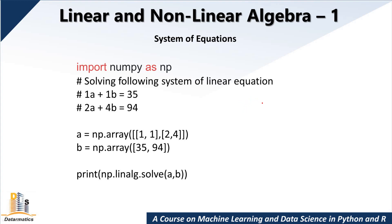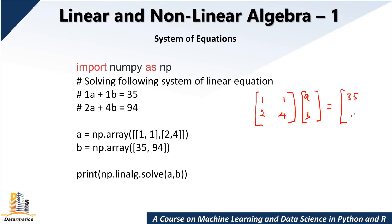So this equation can be represented in matrix form as: 1, 2, 1, 4. This is the matrix form, and we have A and B equal to 35 and 94. Python recognizes this as matrix A and these values as matrix B. In the previous tutorial you already learned how to create matrices like this.